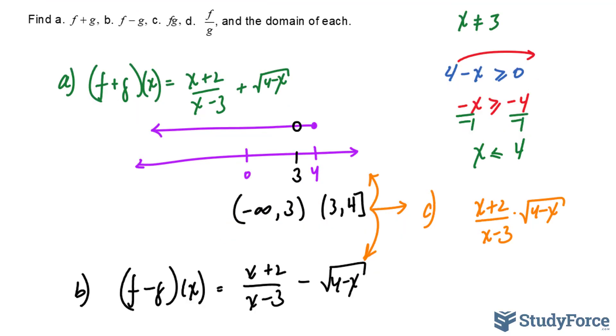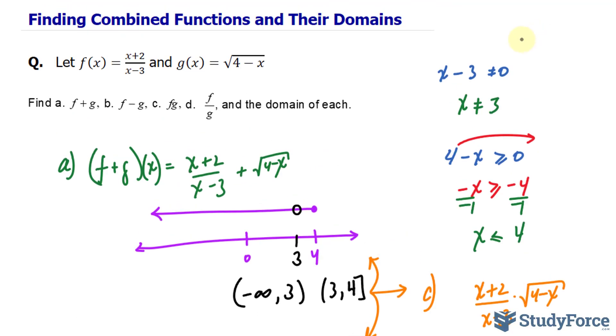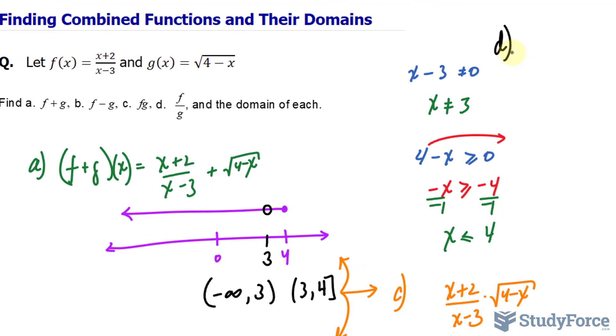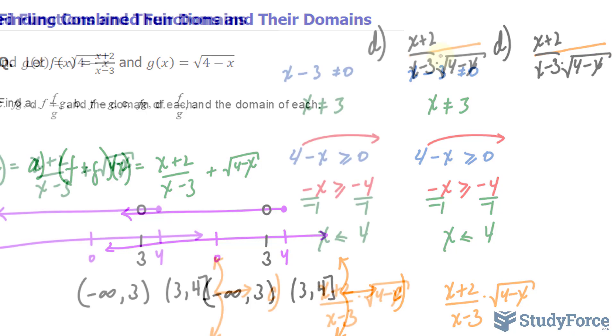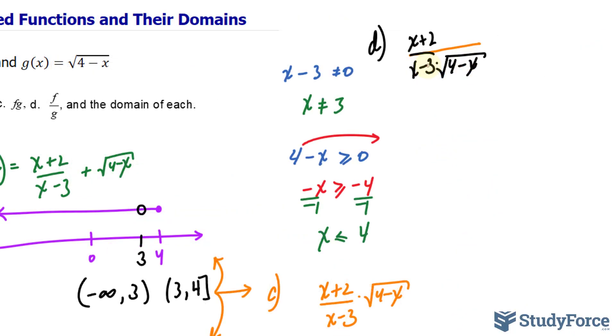This is not the case, however, for D. Let me show you why. For D, we have f being x plus 2 over x minus 3, and that's being divided by the square root of 4 minus x. If I rearrange this, the denominator will go up here, and essentially we have this fraction. This is interesting because, unlike before, we now have a new denominator.